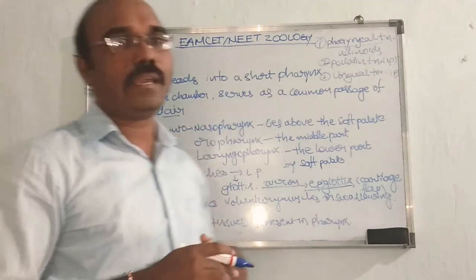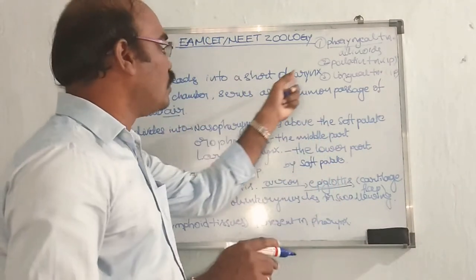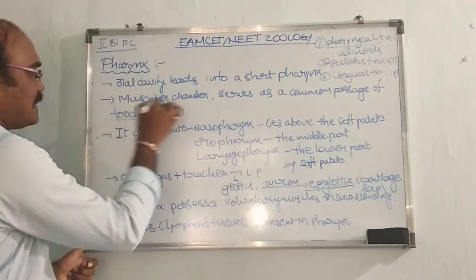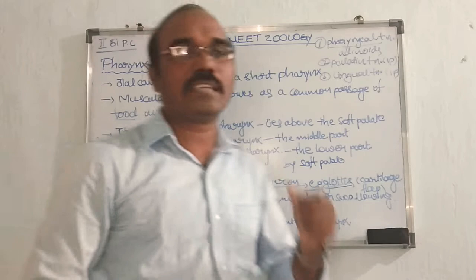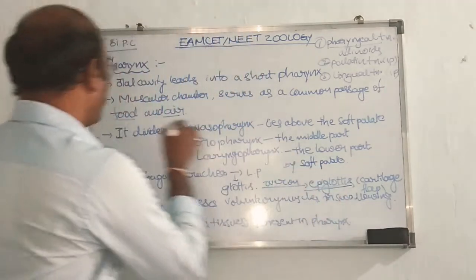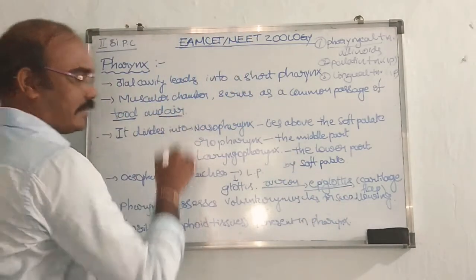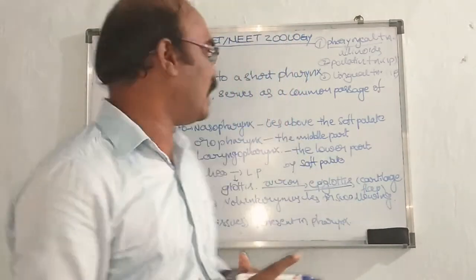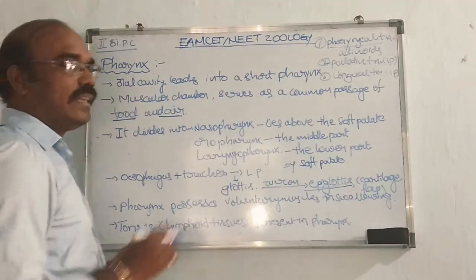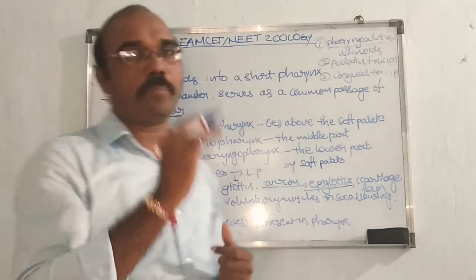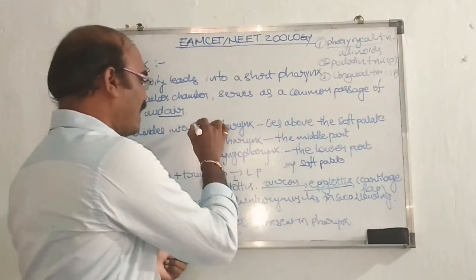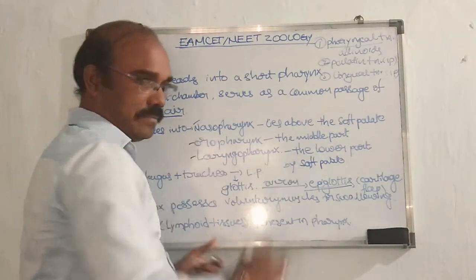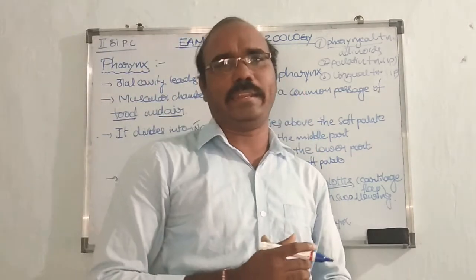Oral cavity leads to the short pharynx. It is a muscular chamber which serves as a common passage of food and air. Then it divides into three parts: nasopharynx, oropharynx, and laryngopharynx, divided by the soft palate.